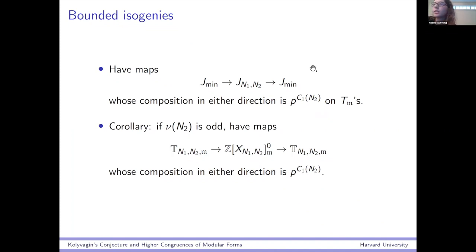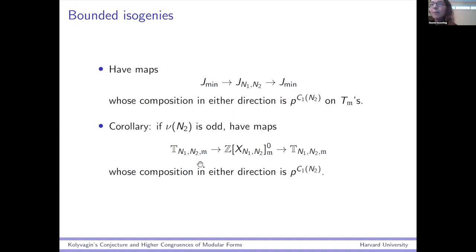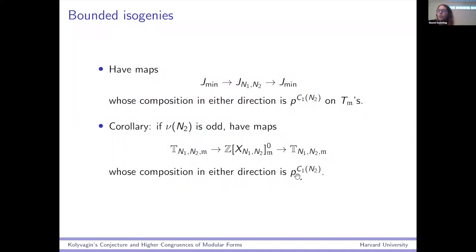We have maps between J_min and J(N_1,N_2) whose composition in either direction is P to this power on the Tate modules. So they tell you that J(N_1,N_2) and J_min are sort of good approximations to each other. A corollary: you can also think of this in the definite case — when N_2 has an odd number of prime factors, and instead of a Shimura curve you only have a Shimura set, which is like a double coset space for this definite quaternion algebra. You can get maps between the Hecke algebra and the free Z-module on the Shimura set, whose composition in either direction is again this error term. These are spaces that when you tensor with Q, they're the same by Jacquet-Langlands.